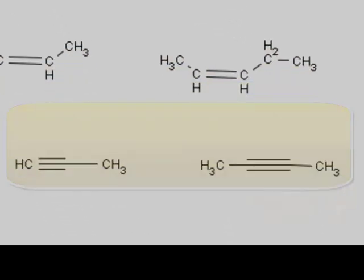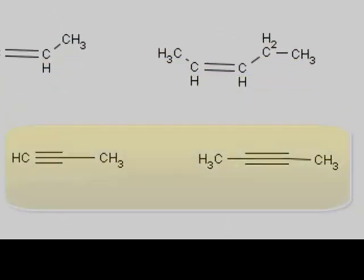Below the alkenes are alkynes. Alkynes can be distinguished because they have at least one carbon-carbon triple bond.